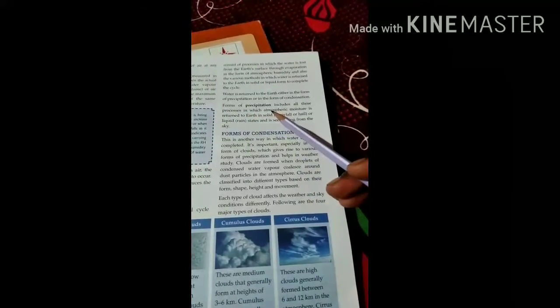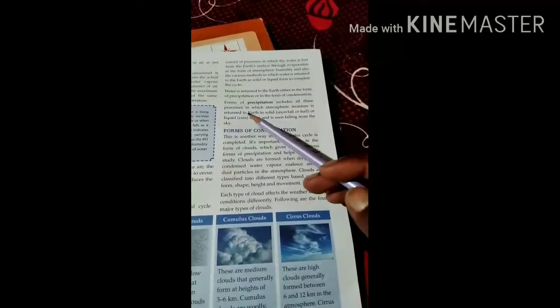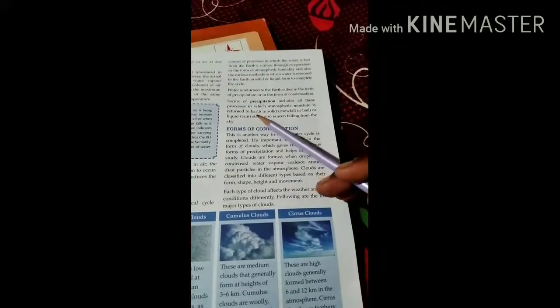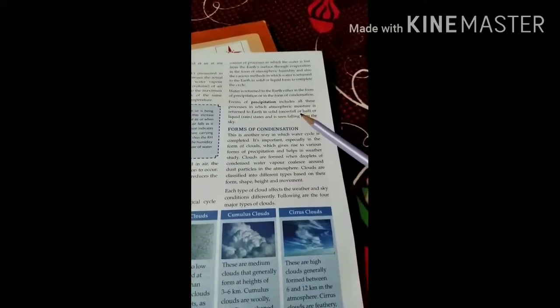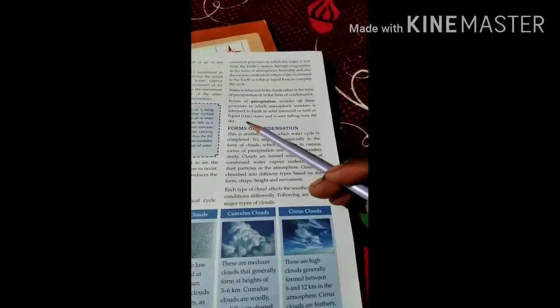Forms of precipitation include all processes in which atmospheric moisture is returned to earth in solid form like snowfall or hail, or liquid form like rain, and is seen falling from the sky.